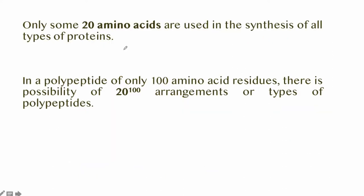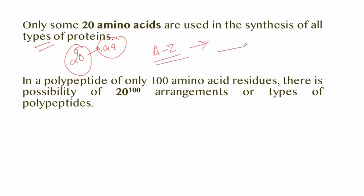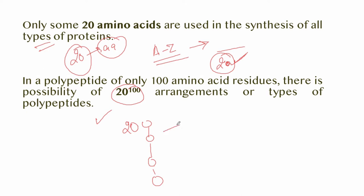Only 20 amino acids are used in the synthesis of all types of proteins. This is similar to the formation of innumerable words from a limited number of alphabets — like A to Z. In a polypeptide of only 100 amino acid residues, there is a possibility of 20 raised to the power 100 arrangements or types of polypeptide. For example, a polypeptide with 20 amino acid residues can form 20 raised to the power 20 different types.